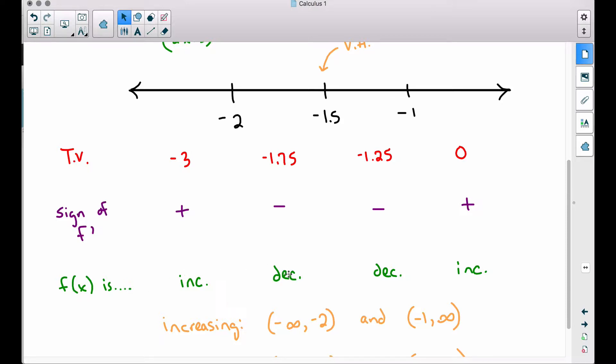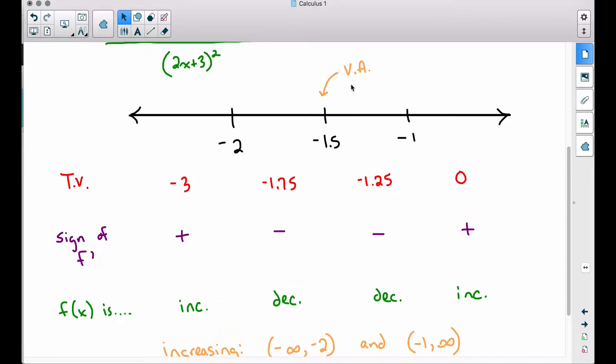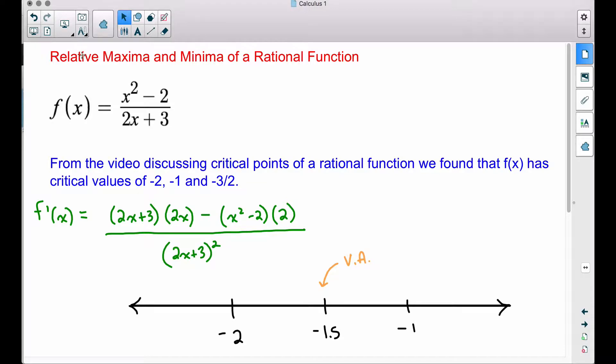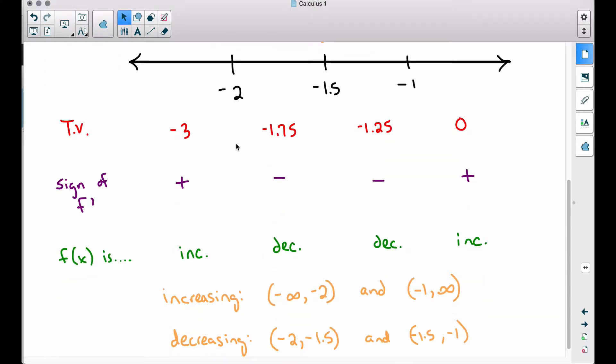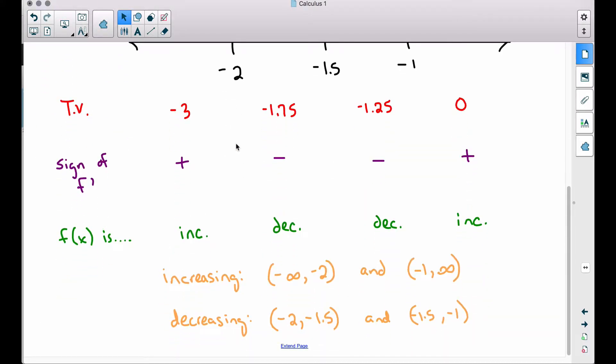we determined the sign of f prime, and then we ultimately talked about the intervals on which f(x) is increasing, decreasing, we even mentioned some vertical asymptotes on this function. And now what we want to do is we want to take this one step further, and we want to determine the relative maxima and minima of this rational function. So it's the exact same work that you see here that we did in the previous video. We go one step further now,